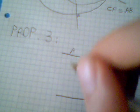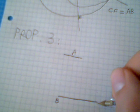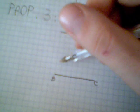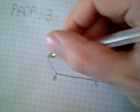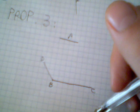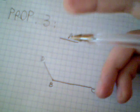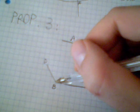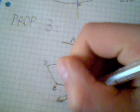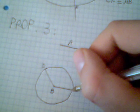From B I draw a line BD that is equal to A and this is possible from proposition number 2. Then I take B as a center and BD as a radius and I draw a circle and I get a point E.